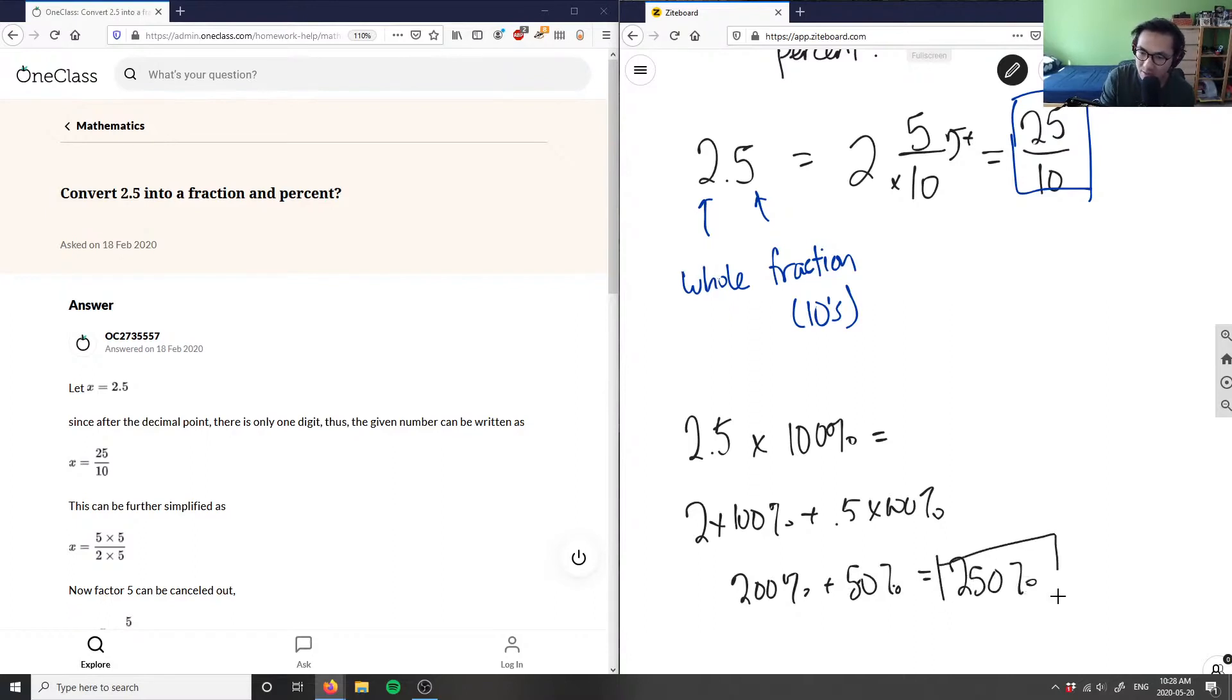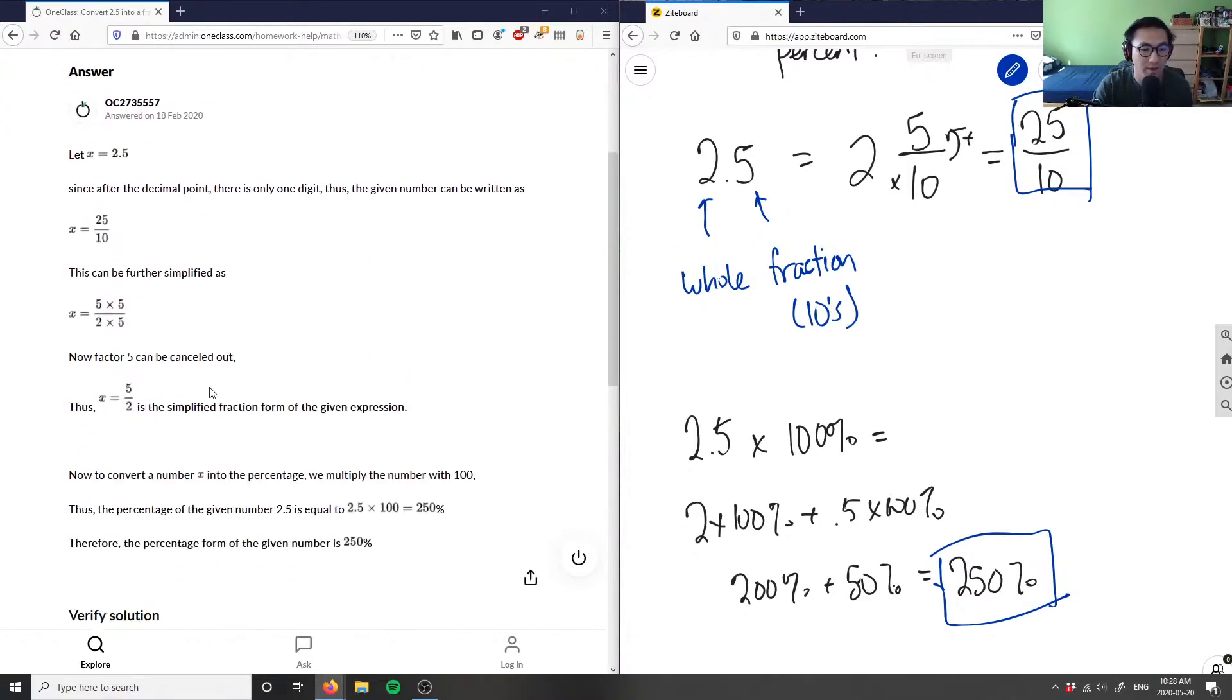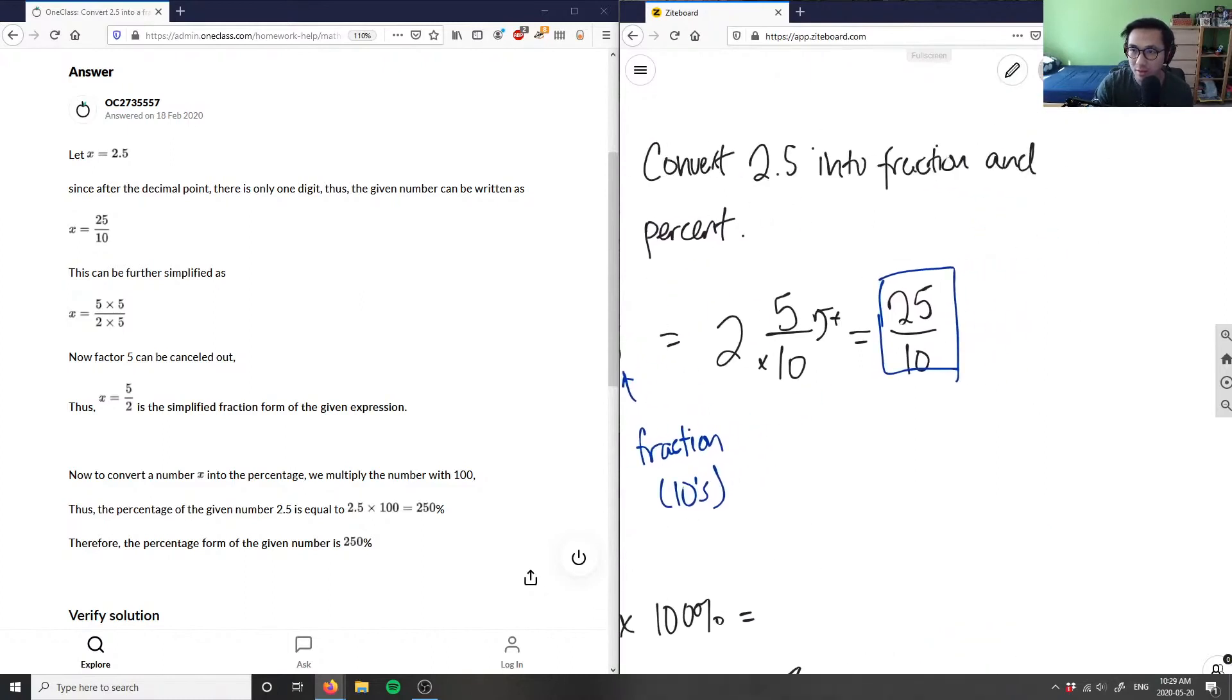This is the answer to the question: 25 over 10 is the fraction form, and 250 is the percentage form. What they did was actually reduce this to lowest terms, so I think I like that better. Let me reduce this to lowest terms for you.